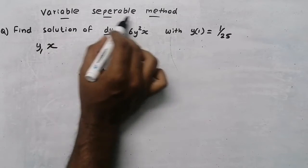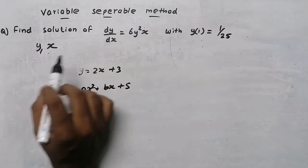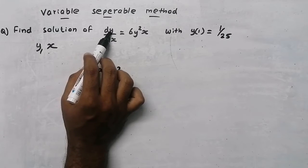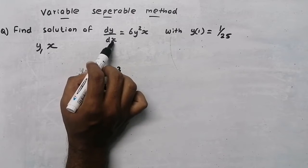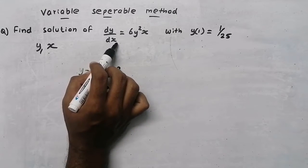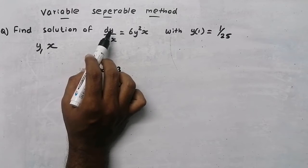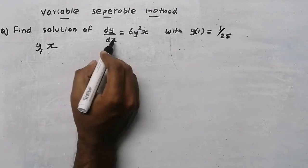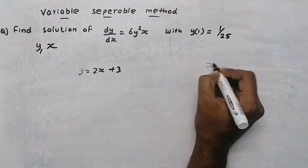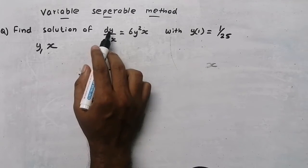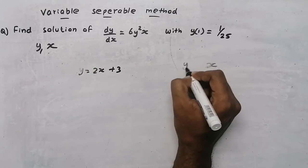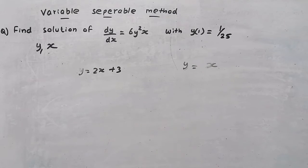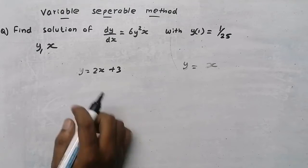We are going to separate y and x — that is the meaning of the name 'variable separable method.' Here y is in the numerator and x is in the denominator. x is the independent variable and y is the dependent variable, meaning x does not depend on anything, but y is going to depend on x.